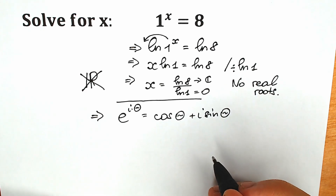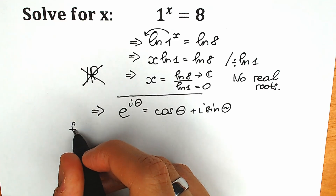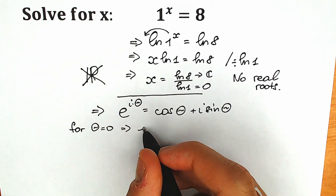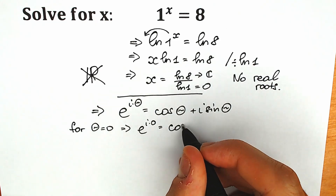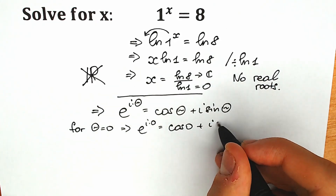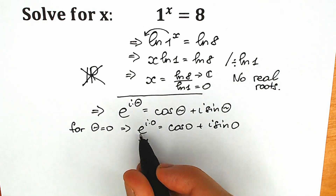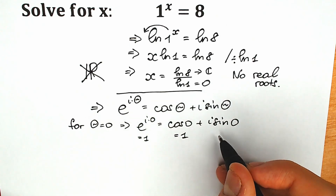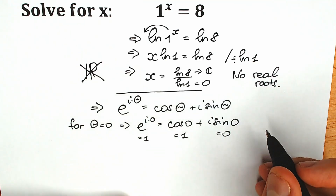This is Euler's identity. We can check it, for example, when theta equals zero. For theta equal to zero, we have e to the power i times zero equal to cosine zero plus i times sine zero. On the left side we have one, because e to the power zero equals one. Cosine zero equals one and sine zero equals zero, so we get one equals one. Euler's identity checks out.